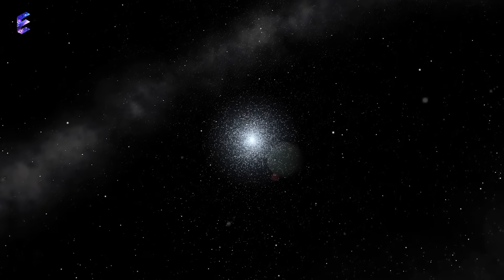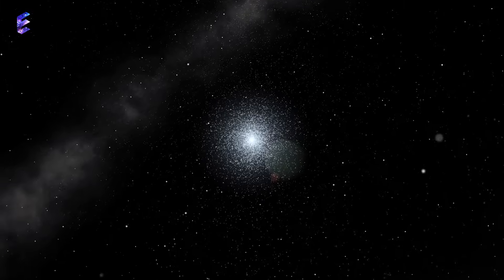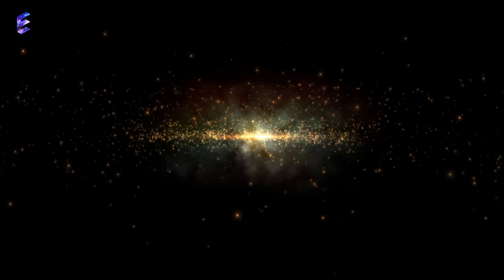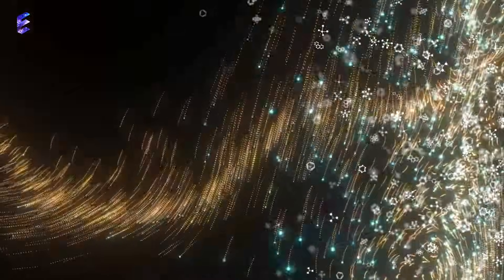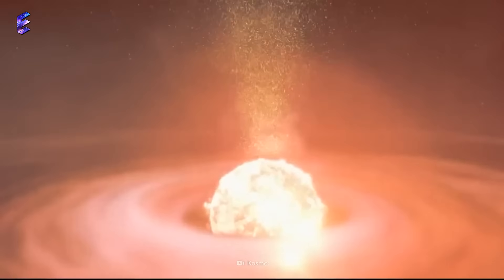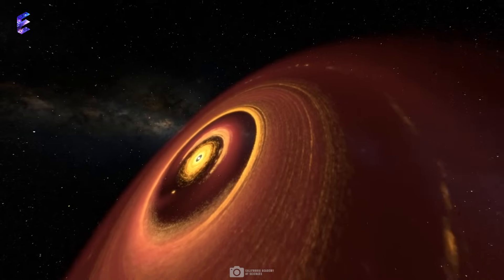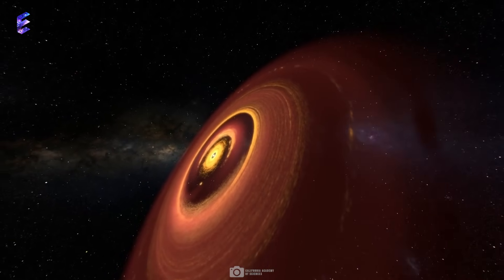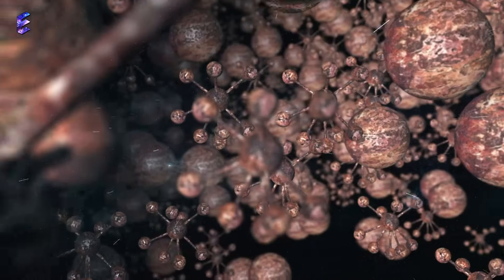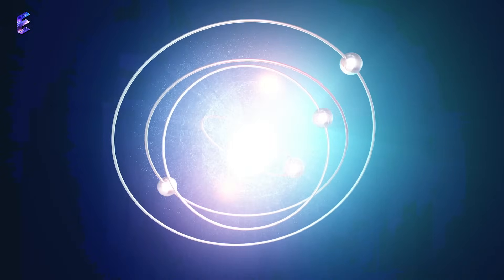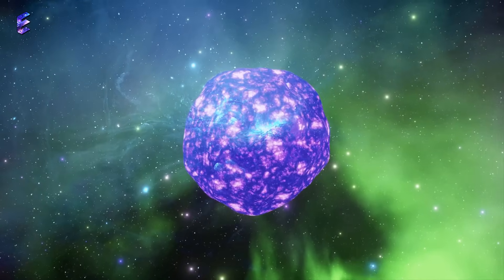The star clusters in question are called globular clusters, ancient celestial enclaves born approximately 13.4 billion years ago. They are not only the most massive and ancient of star groupings, but they also possess a peculiar characteristic: compositional variation among their stars. Picture this, stars born together, side by side, emerging from the same cosmic womb of collapsing gas and dust. Yet, despite their shared origins, they exhibit striking differences in the abundance of elements such as oxygen, nitrogen, sodium, and aluminum. This enigma, known as abundance anomalies, has perplexed astronomers for years, challenging their attempts to decipher the cosmic puzzle.